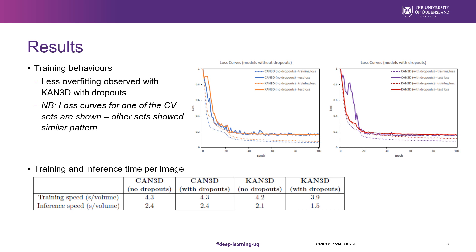Due to the small size of the training set, the models without dropouts quickly overfitted to the training data. Adding dropouts to the vanilla CAN3D reduced the degree of overfitting, but a greater reduction in overfitting was observed by adding dropouts to the CAN3D with the Collidoscope Transform. Another notable observation was that the test loss converged in a more stable manner. The dropouts seemed to have a synergistic effect when used with the Collidoscope Transform in regularizing the model.